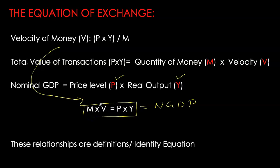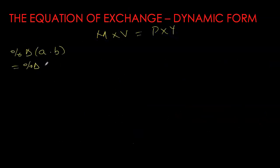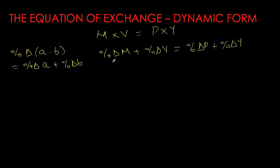The equation of exchange simply tells us that the value of transactions will always equal the quantity of money times its velocity. We can verify this: in our example, nominal GDP was $300, the money stock was $100, and velocity was three — so the equation holds. We can also rewrite the equation of exchange in its dynamic form. Recall the math rule that the percentage change of a product is simply the sum of the percentage changes of each variable. Taking percentage changes on both sides gives us the dynamic form of the equation of exchange.